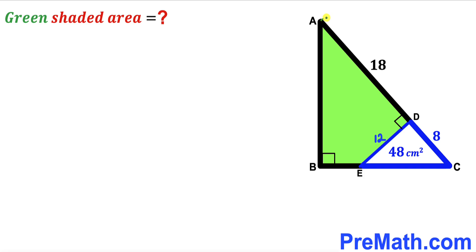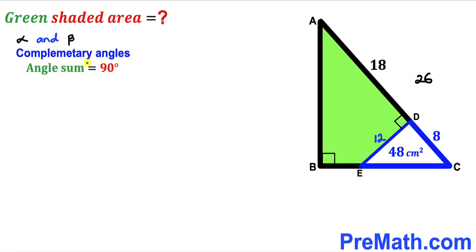Now let's make an observation. We can see this whole AC length is going to be the sum of these two individual lengths: 8 plus 18, that gives us 26 centimeters. Now let's assume that alpha and beta are our two complementary angles — in other words, the sum of alpha plus beta must be equal to 90 degrees. If this angle is alpha, then in triangle ABC this other angle has got to be beta, since this is our 90 degree angle.